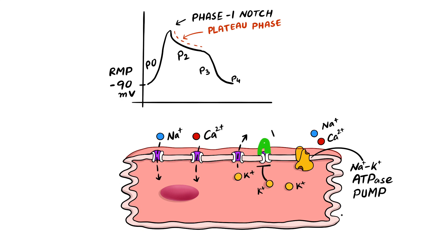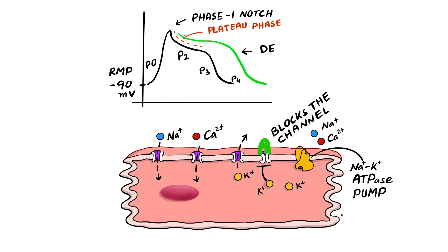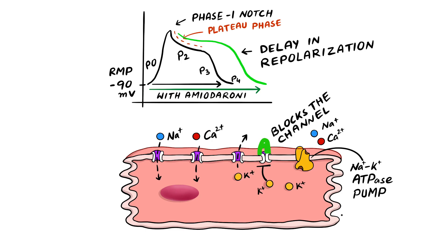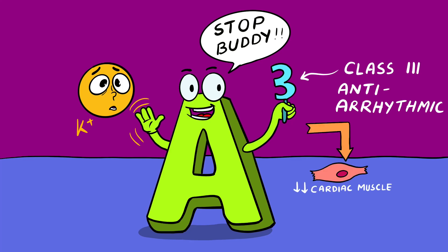Amiodarone primarily blocks potassium rectifier currents, so there will be a delay in repolarization, as you can see in this graph. As a result, amiodarone reduces cardiac muscle cell excitability and prevents abnormal heart rhythms.